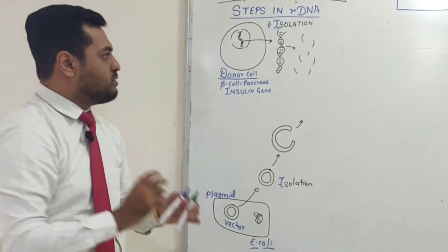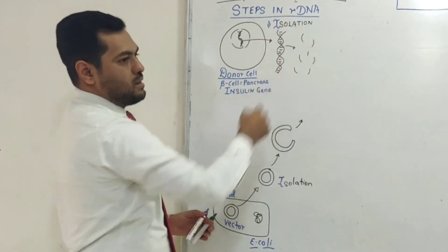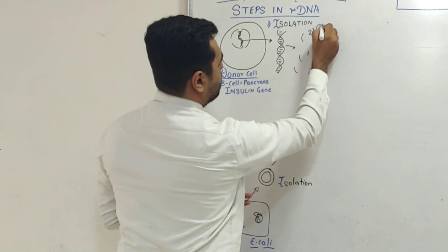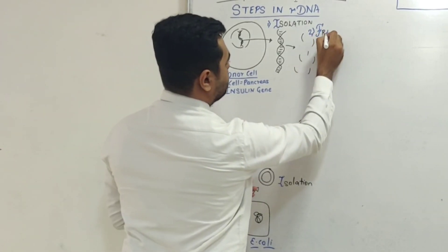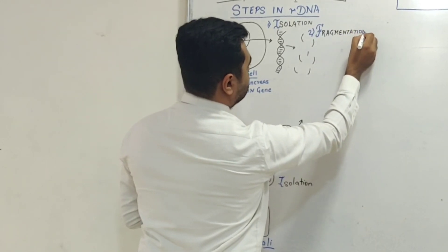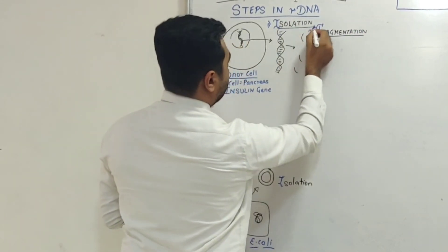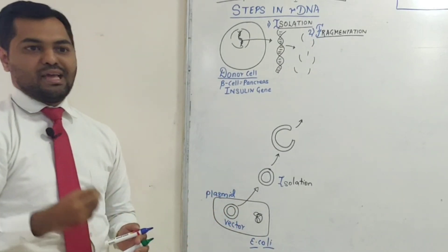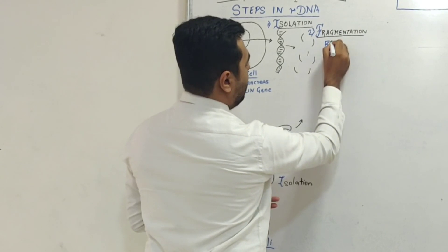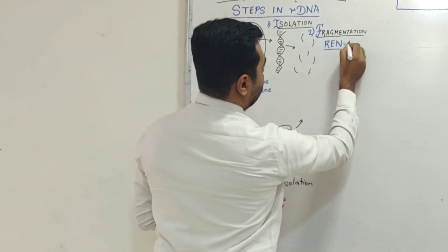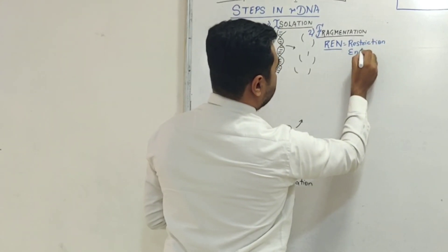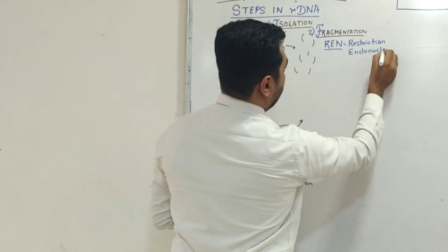After isolation, the next step is fragmentation. This DNA is cut into multiple segments. This fragmentation process happens with the help of a specific enzyme - the most important enzyme used in biotech, known as REN, which is restriction endonuclease.